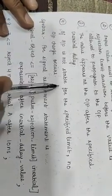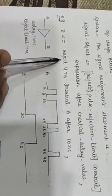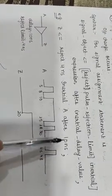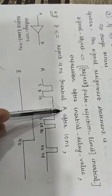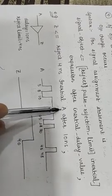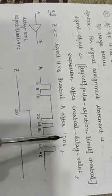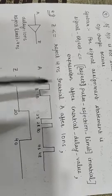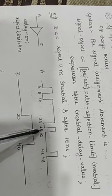For this, I have taken an example: Z is Reject 4 nanoseconds Inertial A after 10 nanoseconds. So for input A, I first need to check that the waveform for A is stable for 4 nanoseconds. If it is stable for 4 nanoseconds, then I add a delay of 10 nanoseconds to get the output. Here is the waveform taken from the book 'VHDL Primer' by J. Bhaskar.